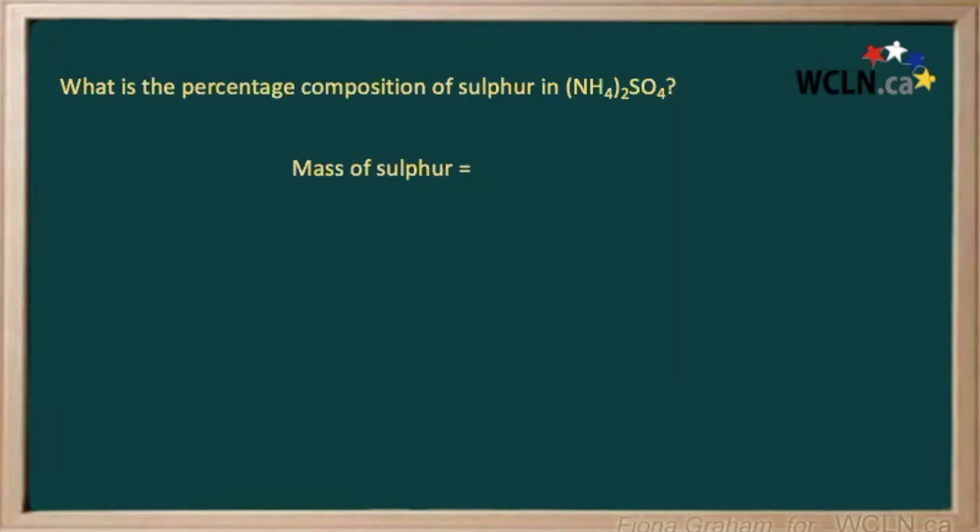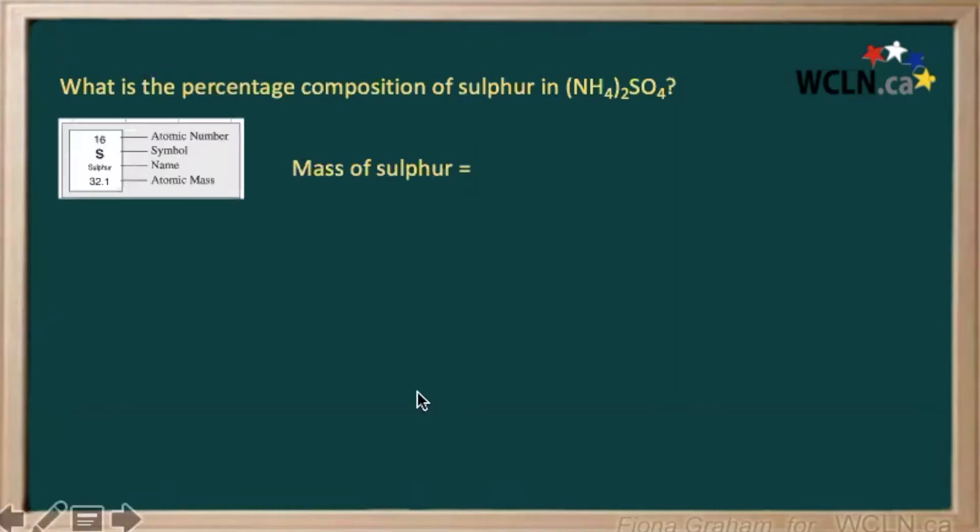Let's calculate the mass of our sulfur first. We can see here the mass of our sulfur is 32.1, and we only have one atom of sulfur in our ammonium sulfate, so we just get 1 times 32.1, giving us 32.1 atomic mass units for our sulfur.